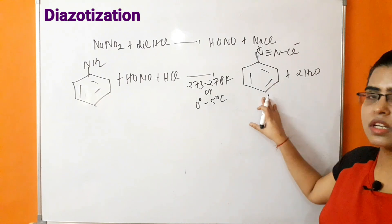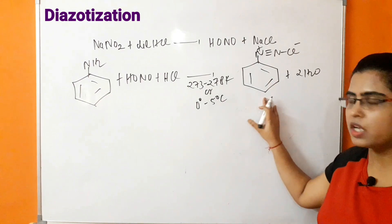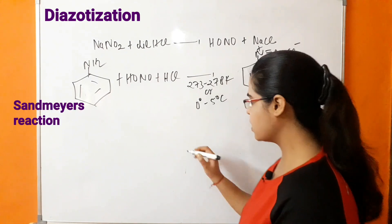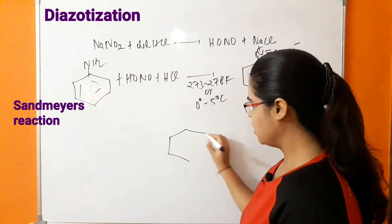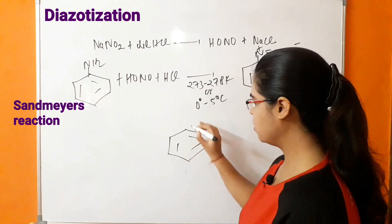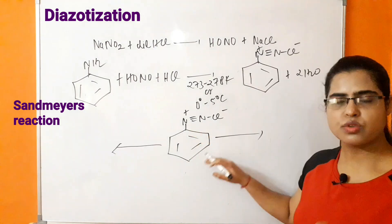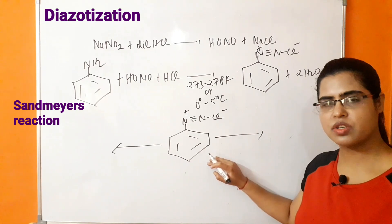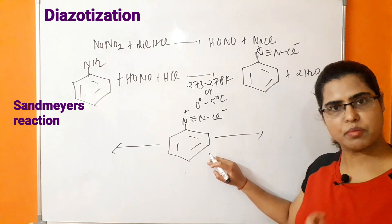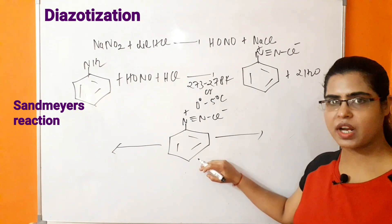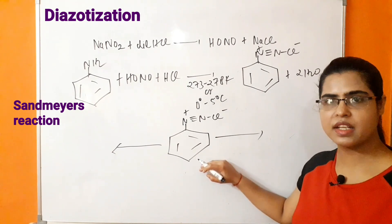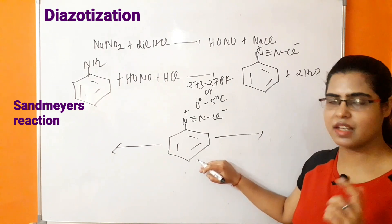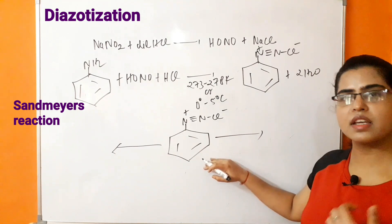The next preparation method is the preparation of haloarenes using diazonium salt. The first reaction we will study is Sandmeyer's reaction. In Sandmeyer's reaction, this method is used for the preparation of both chlorobenzene and bromobenzene. Cuprous chloride or cuprous bromide is dissolved in a specific reagent — either HCl or HBr.